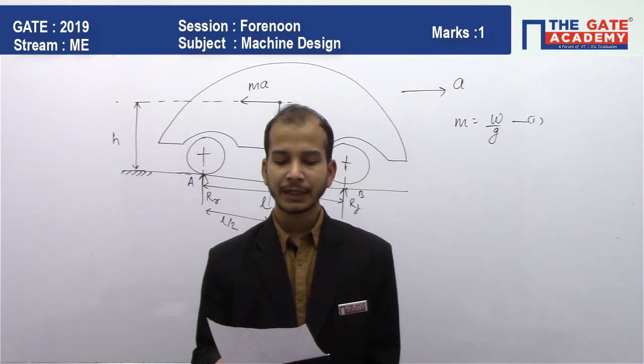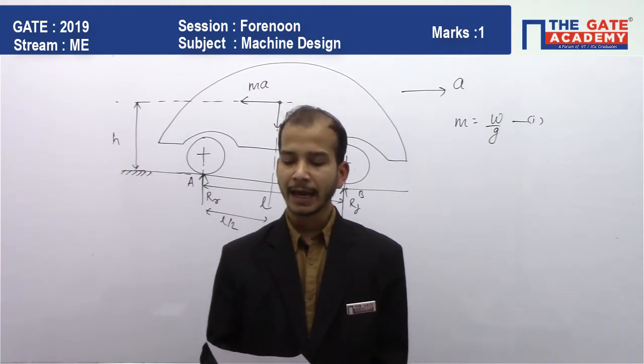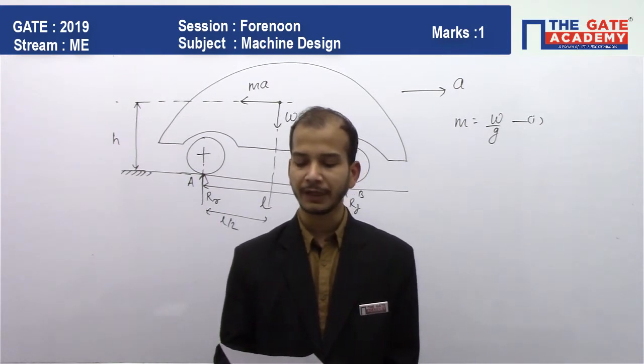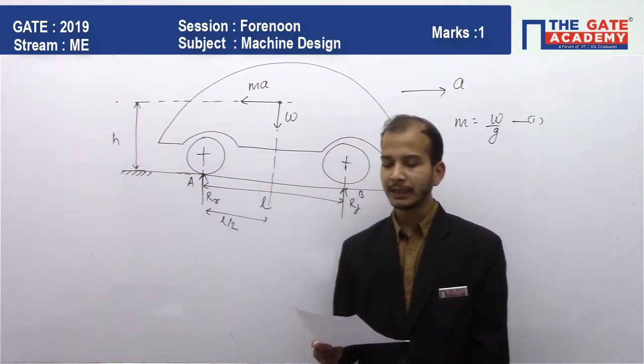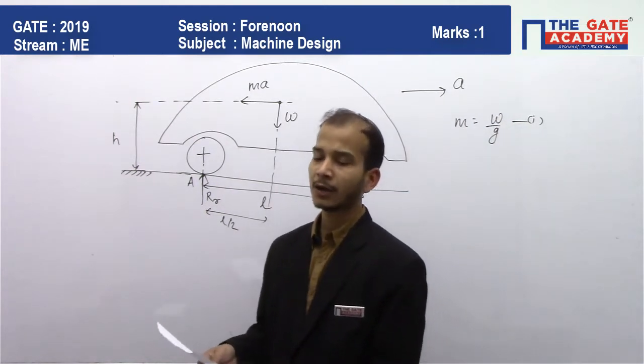The car is moving with acceleration a. Rr is the reaction force on the rear wheel and Rf is the reaction force on the front wheel. The center of gravity is exactly between the wheels.